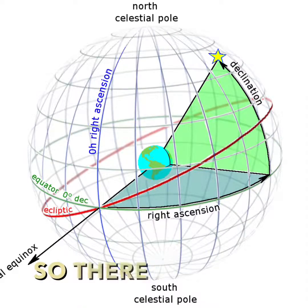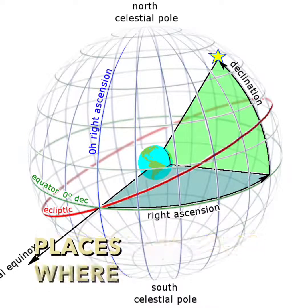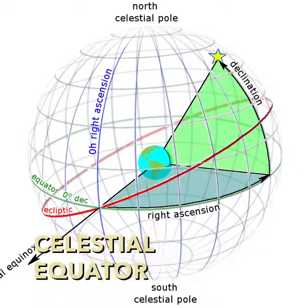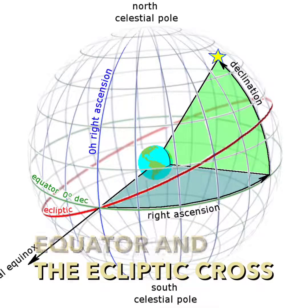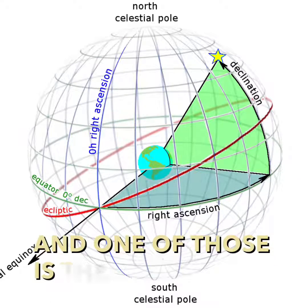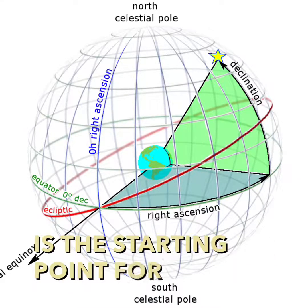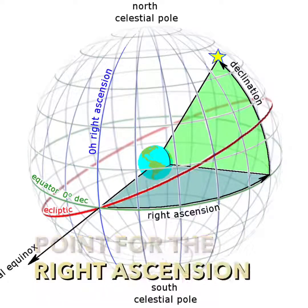So there are two places where the celestial equator and the ecliptic cross and one of those is the starting point for the right ascension scale.